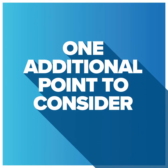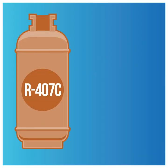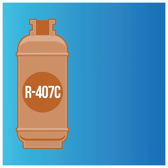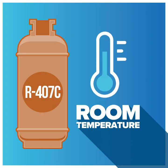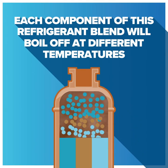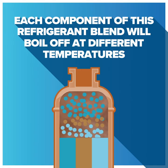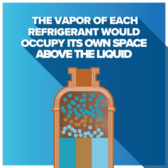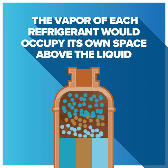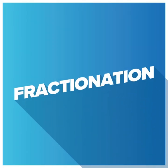In this connection, there is one additional point to consider, and that is fractionation. Let's continue using R407C, and let's say the bottle is stored at room temperature. Each component of this refrigerant blend will boil off at different temperatures, separating from the liquid mixture. The vapor of each refrigerant would occupy its own space above the liquid. This is known as fractionation.